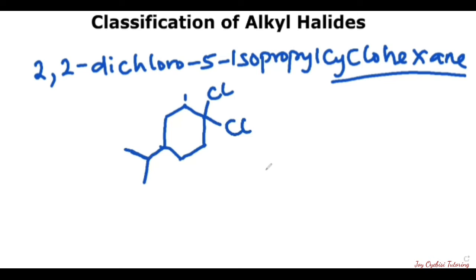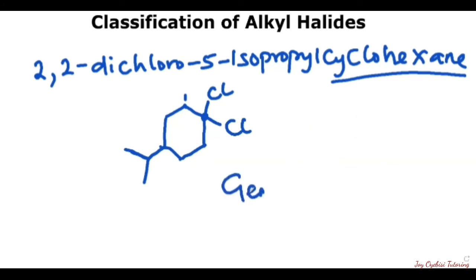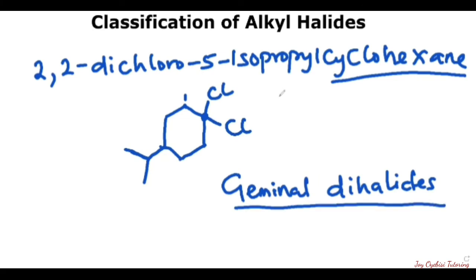The question now is: what is the classification of this particular alkyl halide? We have two halogens attached on the same carbon — that is 2,2-dichloro. It is called a geminal dihalide. So this particular compound's classification is geminal dihalide. When you have the halogens on the same carbon, this is the classification: geminal dihalide.